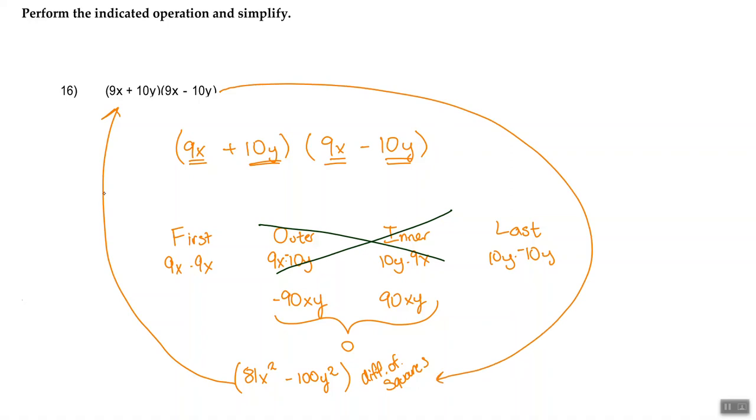So going this way is factoring, and going this way is distributing. In this case, we distribute using the acronym FOIL, and then more specifically in this case, FL.